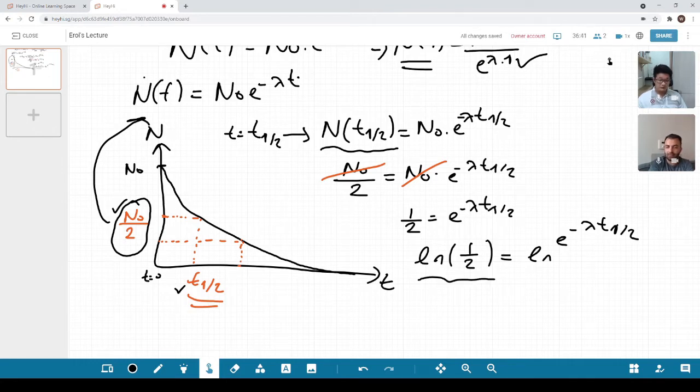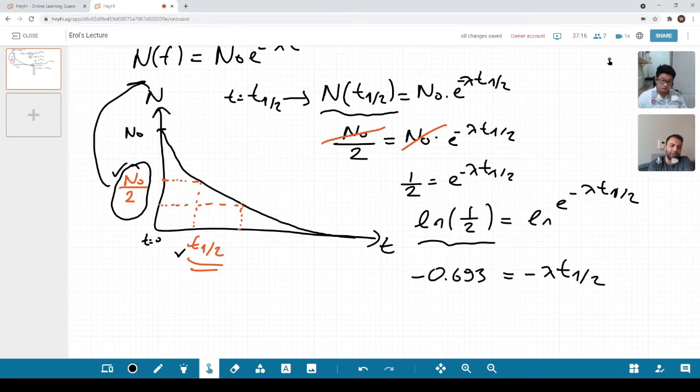This is a number. Can you look down for me? What is this? Negative 0.693. Really? ln(1/2). Negative 0.693. This number is kind of interesting, don't you think? It equals minus λt₁/₂, right? So right now, the natural logarithm and the e cancelled each other out. Do you find this number kind of interesting?